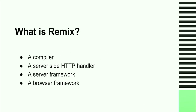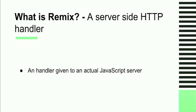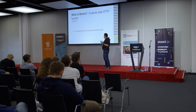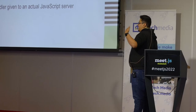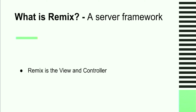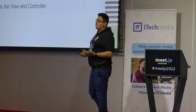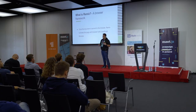Besides this, Remix is known as a compiler, a server-side HTTP middleware, a server framework, and a browser framework. As a compiler, it uses ESBuild to generate a server HTTP middleware, a browser build, and an asset manifest. It's a server-side HTTP middleware that runs independently on any JavaScript server. As a server framework, similar to Ruby on Rails MVC patterns, Remix is the view and controller, leaving the model up to you. As a browser framework, it hydrates your page with the browser build JavaScript modules.